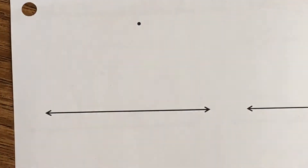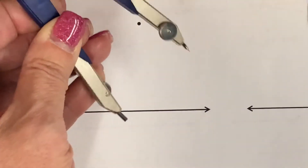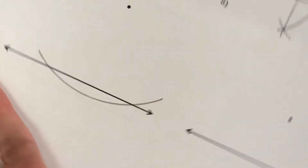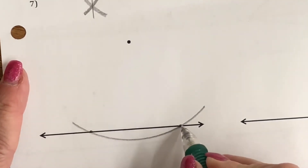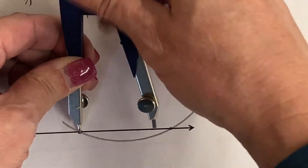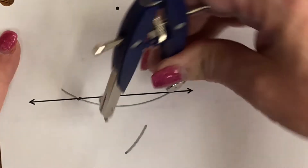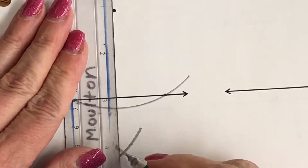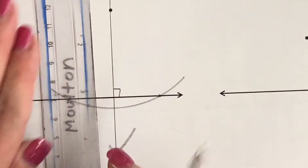Number seven: once again make sure this is long enough to make an arc to hit both lines. My intersection points are about right there and right there. Go a little more than half, make your arc below, and connect those two points. Make sure you draw your symbol to show that it is a 90-degree angle.